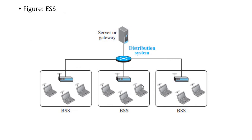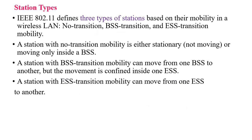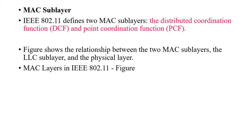Here we can see the architecture of the Extended Service Set. When we connect one or more Basic Service Sets, we can form an Extended Service Set. We need to make sure that everywhere we have an access point inside the Basic Service Set, and overall it comes under a distributed system. The three station types are: no transition, Basic Service Set, and Extended Service Set — these are the contents of IEEE 802.11.